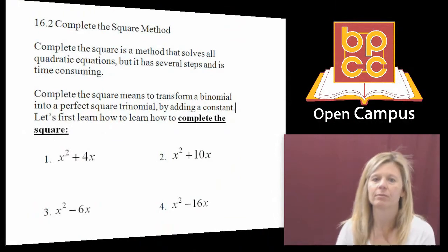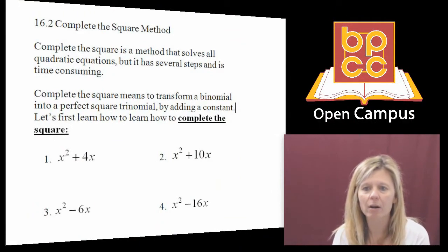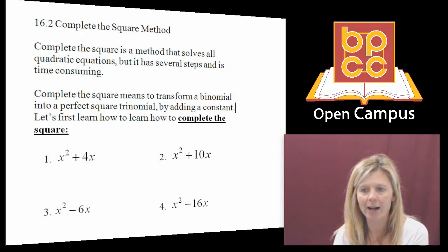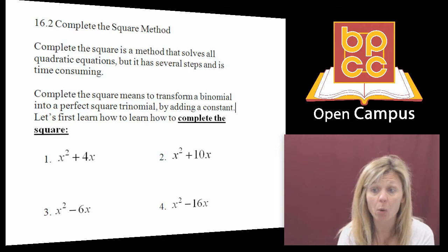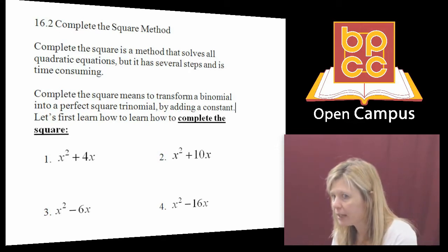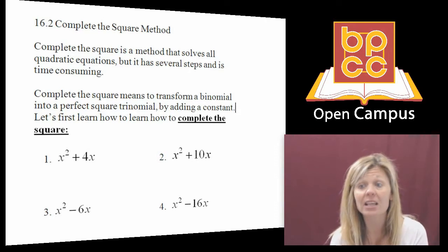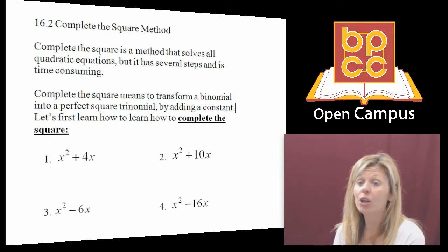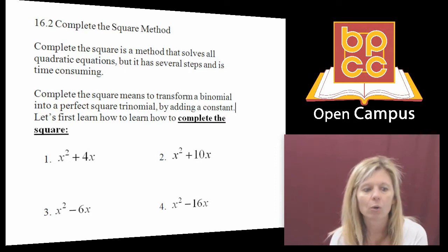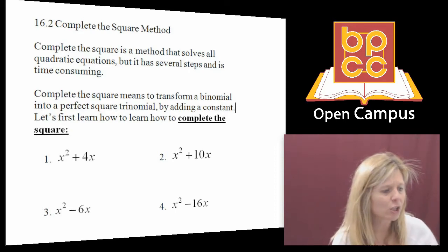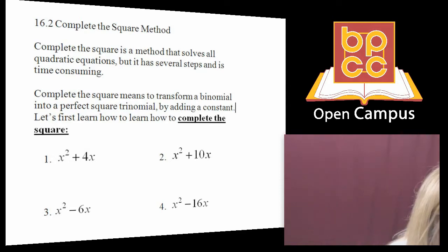The definition: completing the square means to transform a binomial into a perfect square trinomial by adding a constant. So when we complete the square, we start with a binomial — two terms — and we transform or change it into a perfect square trinomial — three terms. How can you change two terms into three terms?